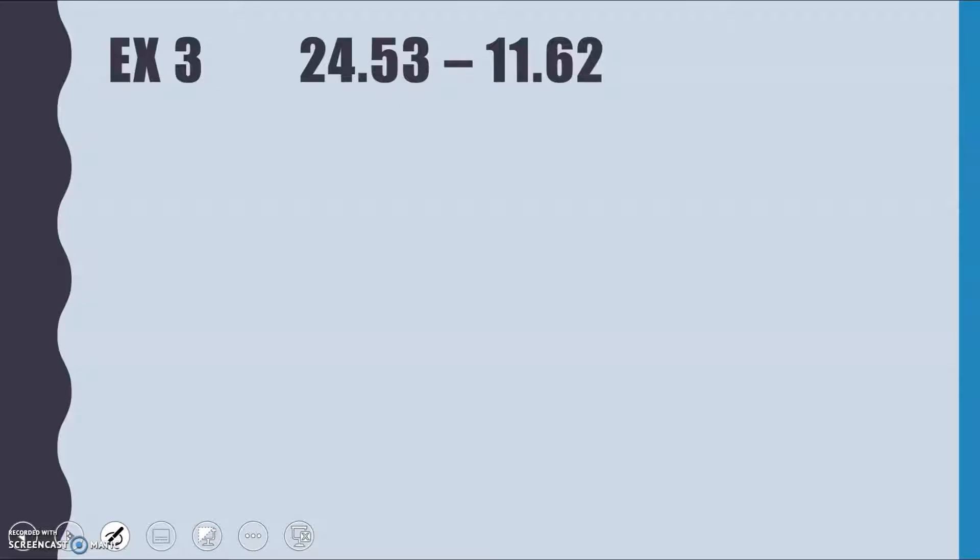For taking away, it is exactly the same procedure. So I'm starting with 24.53, lining up my decimal point. Well, I've got 1 tens, 1 units, 6 tenths, and 2 hundredths, so it should line up nice and neatly like that. My takeaway sign at the start, my equal sign underneath. 3 take away 2 is 1.